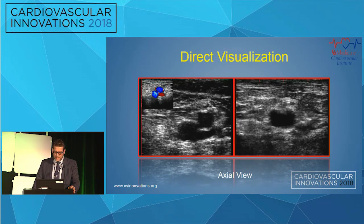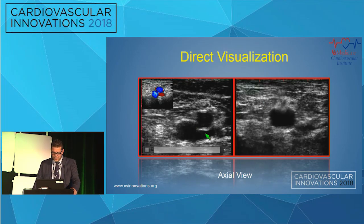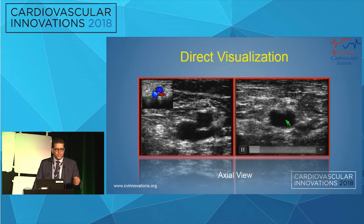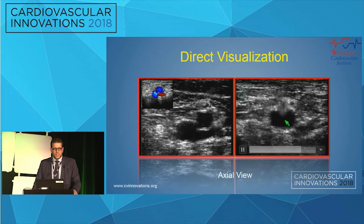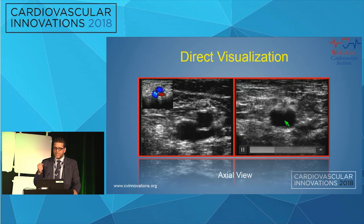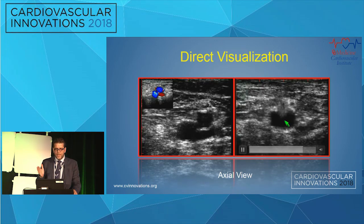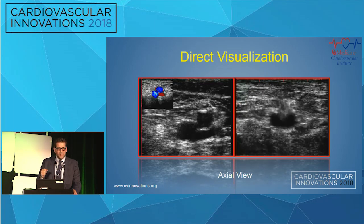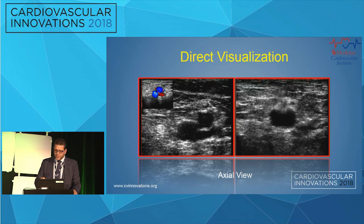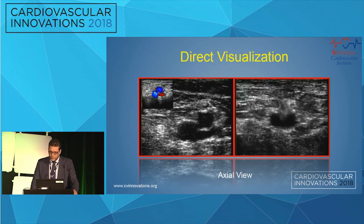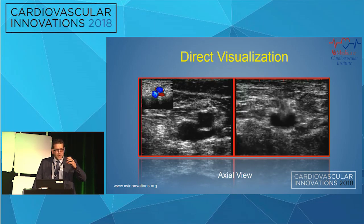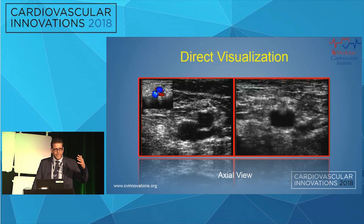These days we mainly use micropuncture needle with ultrasound rather than the 18-gauge needle. There are specific micropuncture needles with laser cuts at the tip so you can see them better under ultrasound — they bounce off the ultrasound waves. Direct visualization is awesome: you can see the artery, the bifurcation, the vein, and the needle actually entering the anterior wall of the artery. If there's disease, you can go a little higher or lower. But remember, ultrasound doesn't keep you from going very high, so always use fluoroscopy as a landmark for the femoral head.